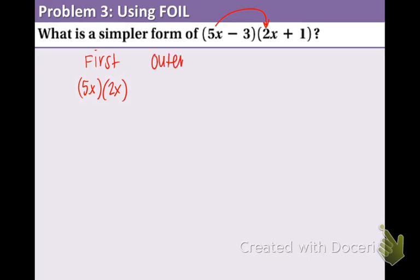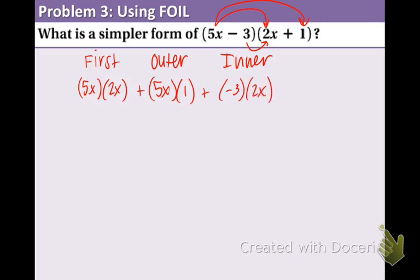Outer comes next. So we have plus 5x times 1. Inner, negative 3 and 2x. And last, negative 3 and 1. Now we just need to multiply. So 5x times 2x is 10x squared. 5x times 1 is 5x. Negative 3 times 2x is negative 6x. And negative 3 times 1 is negative 3.